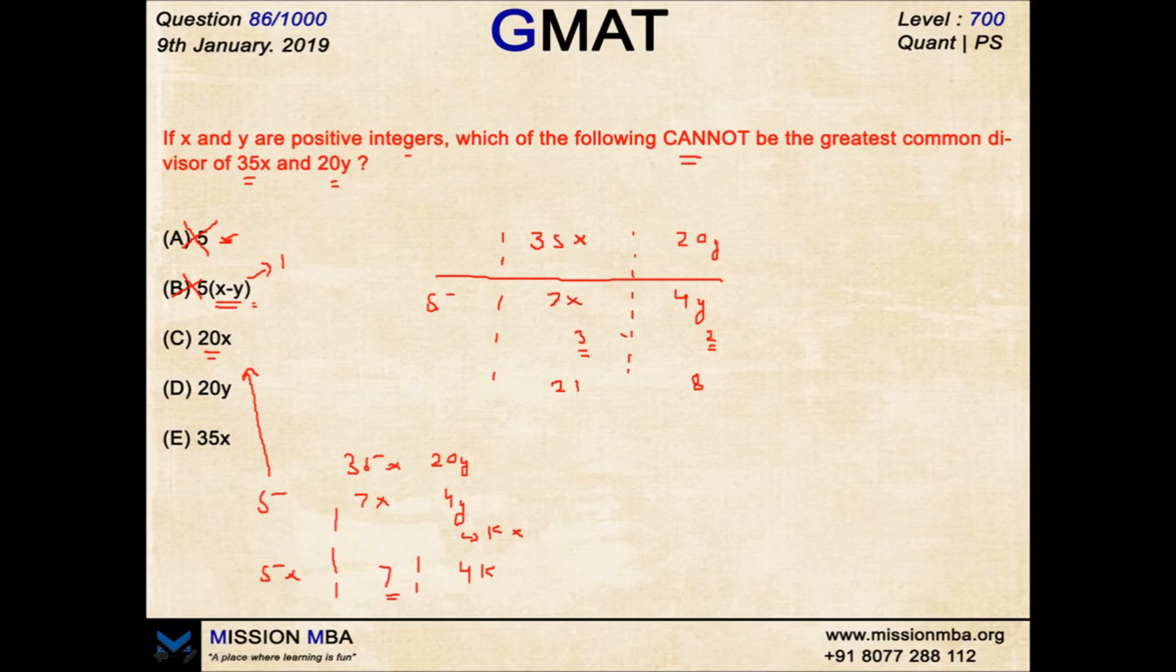Now let's move on to D and E and eliminate those options to be sure of option C. 20Y. So already we have taken 5 common. You are left with 7X and 4Y. Now the idea is to take out 4Y more common to make 5 into 20Y.